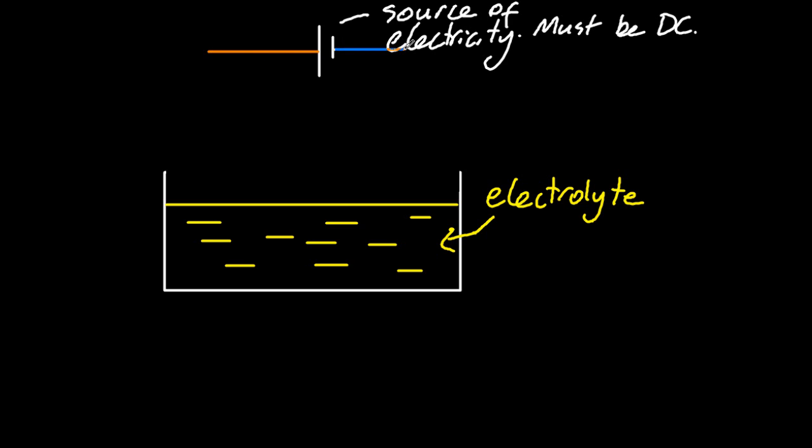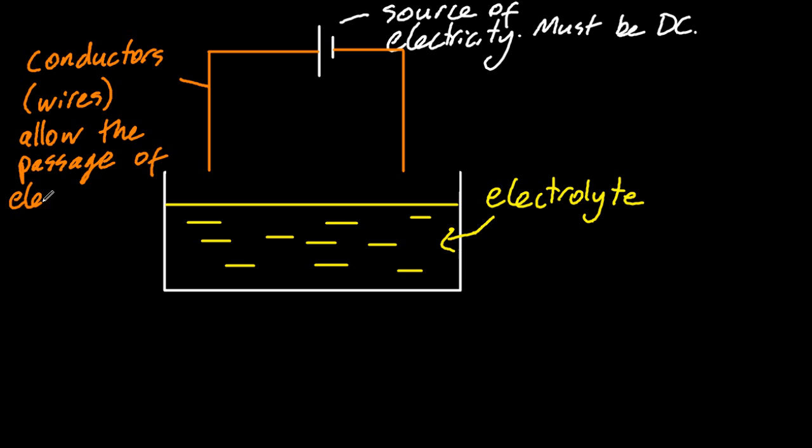To connect the battery to the electrolyte, there's some conductors, otherwise known as wires. So there's a subtlety between a conductor and an electrolyte. Both allow the passage of electricity, but conductors are unchanged by the electricity, whereas the electrolyte is decomposed by it.